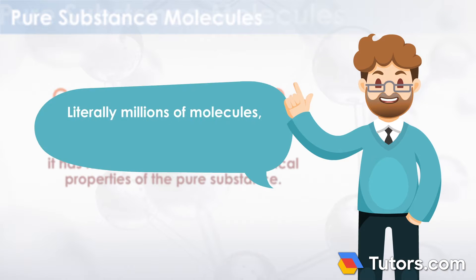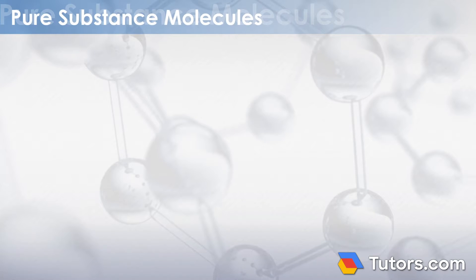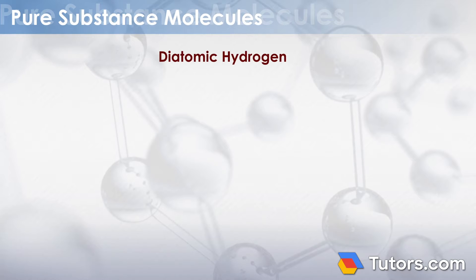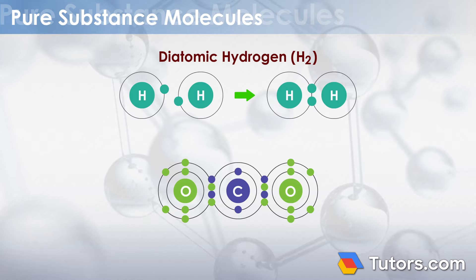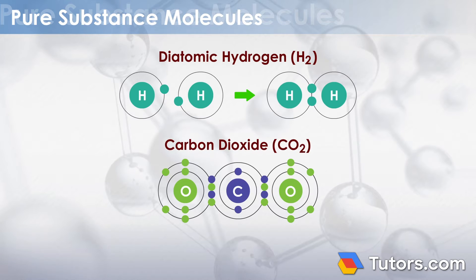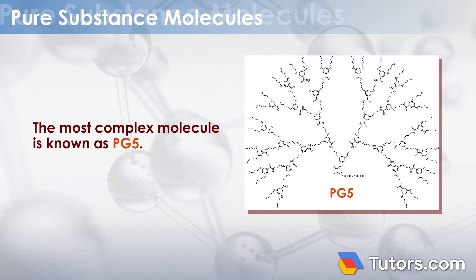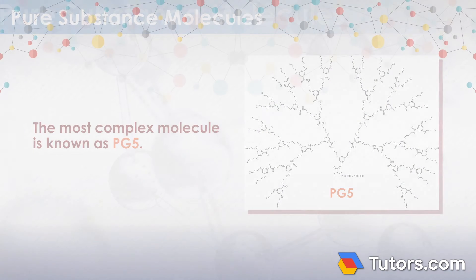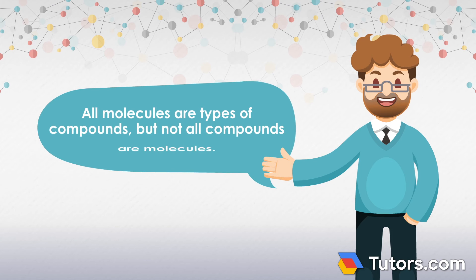Literally millions of molecules — all pure substances — exist in many degrees of complexity. Two of the simplest molecules are diatomic hydrogen, composed of just two hydrogen atoms forming H2, and O2. The most complex molecule is known as PG5. All molecules are types of compounds, but not all compounds are molecules.